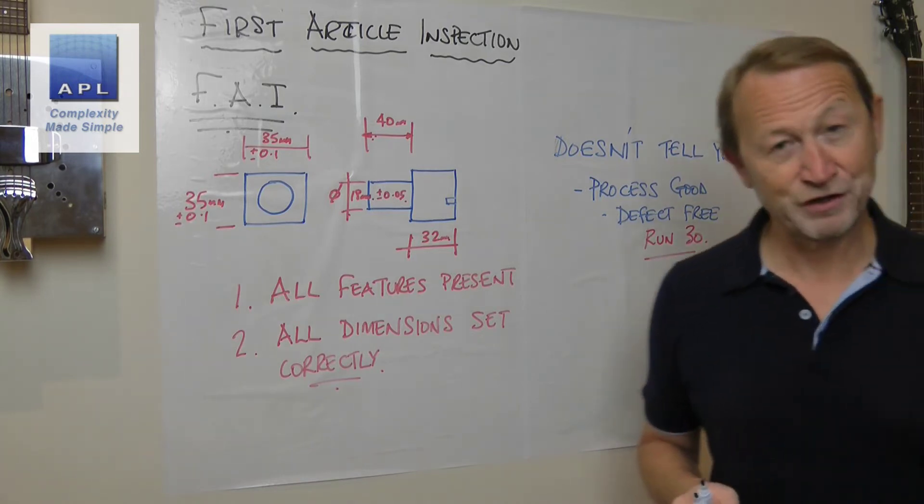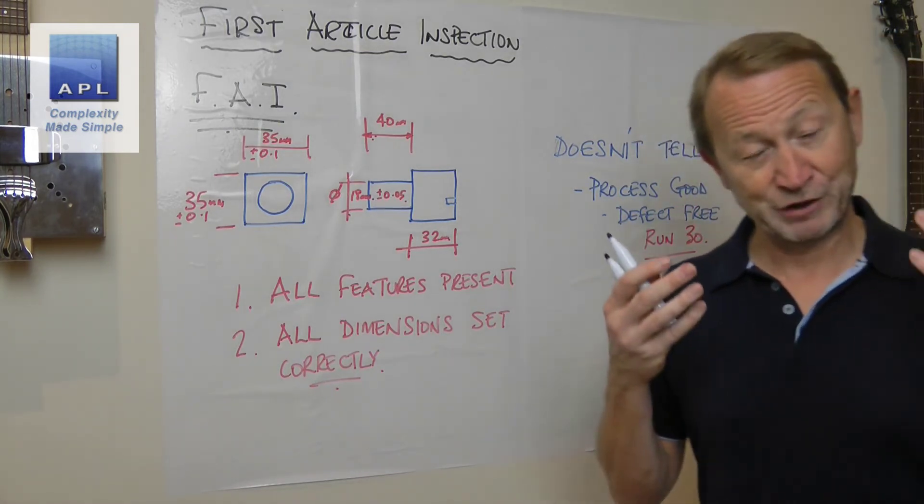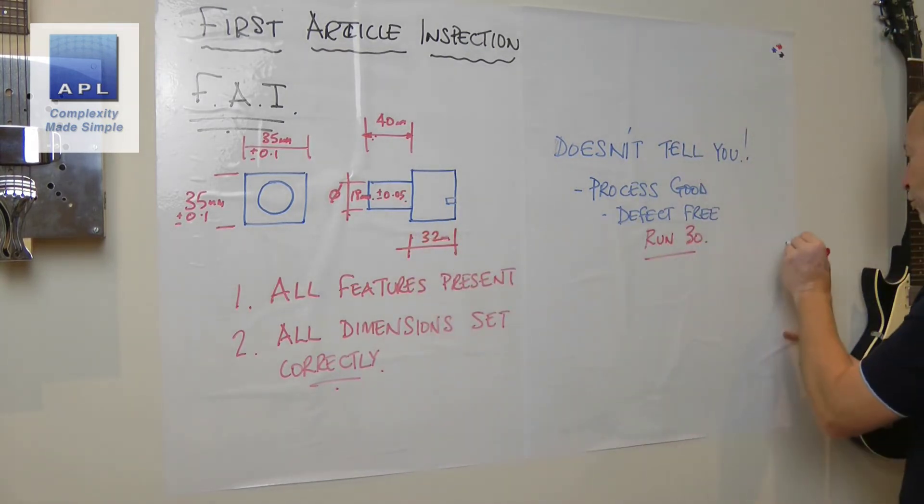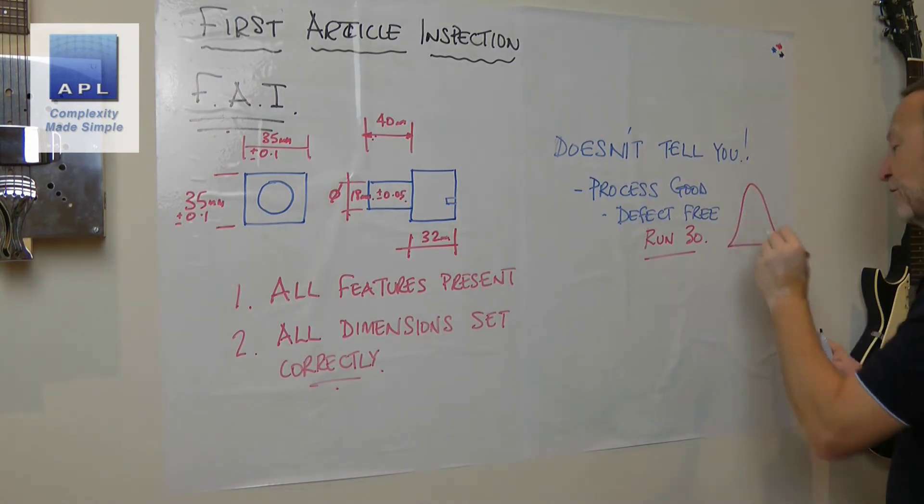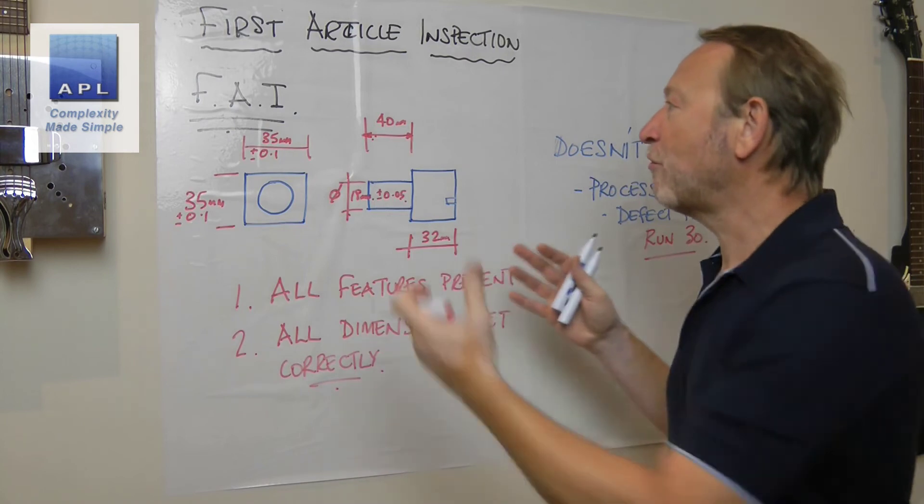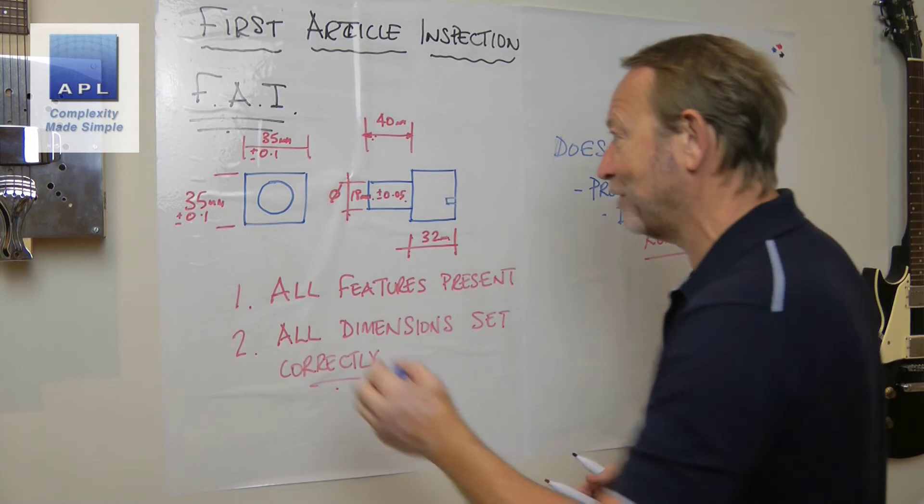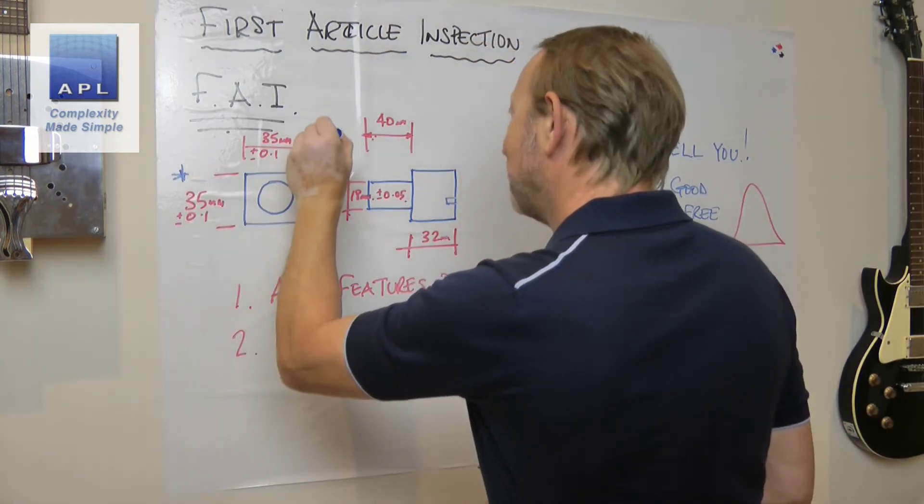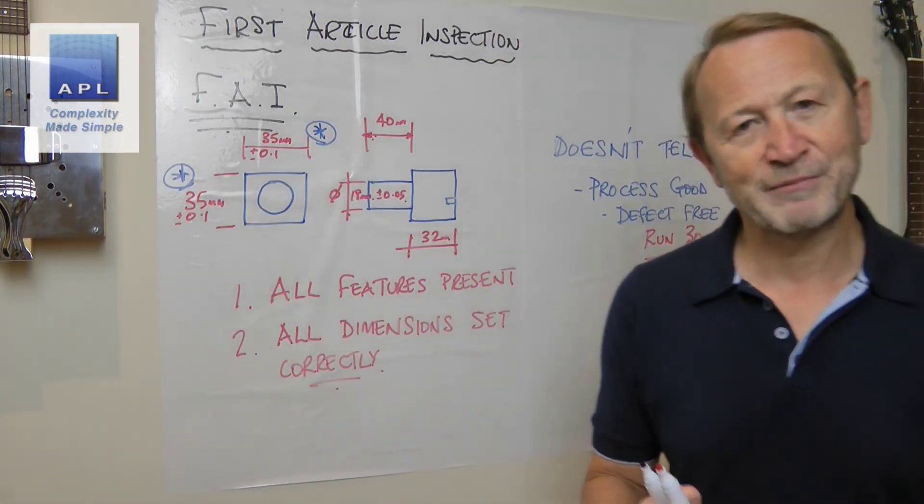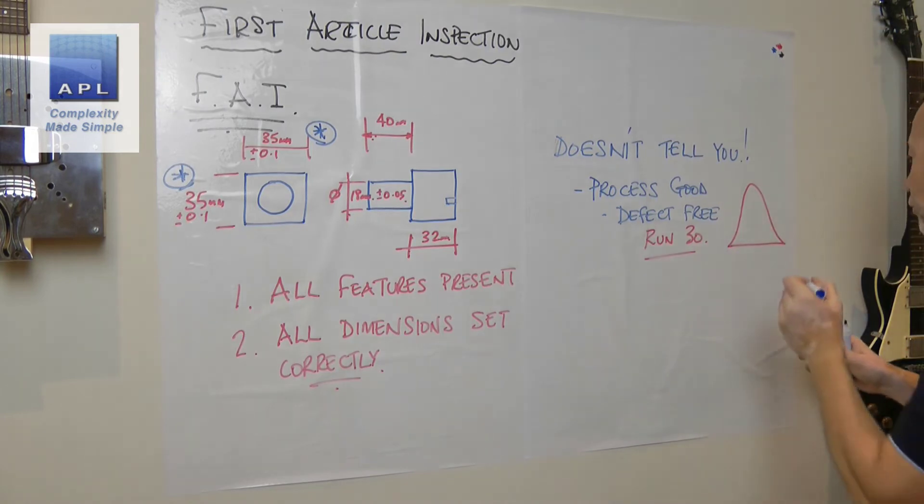You're going to have to run 30. You're going to have to do a proper new product introduction, you have to do a proper pilot run, hands off. You want to see the distribution for each one of these. Maybe you only want the distribution for the important dimensions. Maybe you could get your customer to say, well, this is a critical dimension, this is a critical dimension, but the others we're okay about. That would be important information to know.